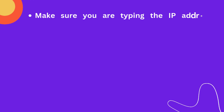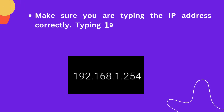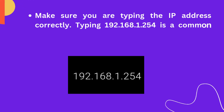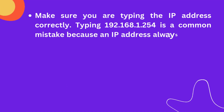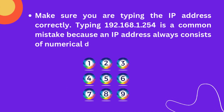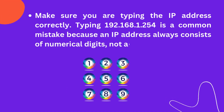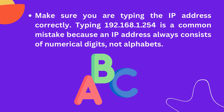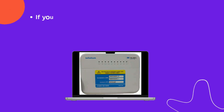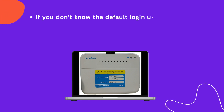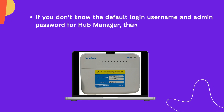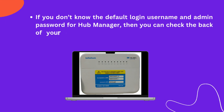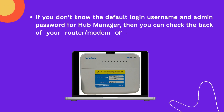Make sure you are typing the IP address correctly. Typing 192.168.1.254 incorrectly is a common mistake because an IP address always consists of numerical digits, not alphabets. If you don't know the default login username and admin password for Hub Manager, you can check the back of your router or modem, or in the manual guide.